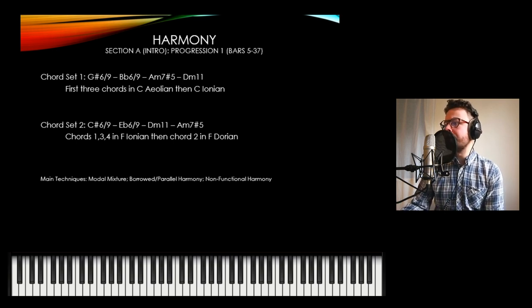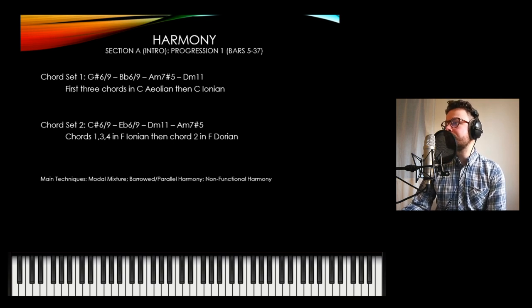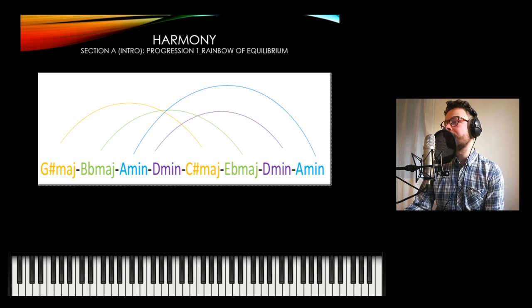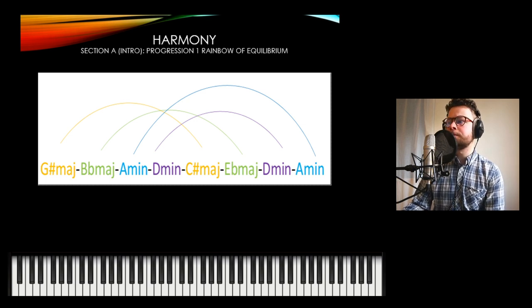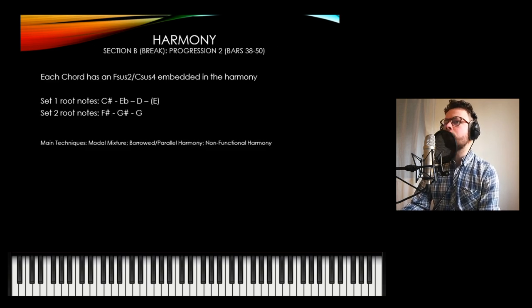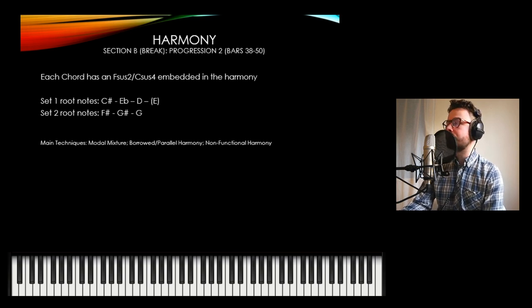Just something to note: as we've analyzed through the modes of C and F, there's definitely a connection there. In this piece, or at least this portion of the piece, I wanted to create a sense of equilibrium. So as you can see from my rainbow of equilibrium, the chords G sharp major and C sharp major are a fourth apart; B flat major and E flat major are a fourth apart; and A minor and D minor are a fourth apart — they share that quality and their tonality. This sense of equilibrium is very quickly destroyed in the second section, which is the break.